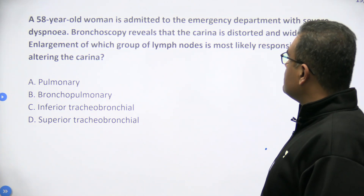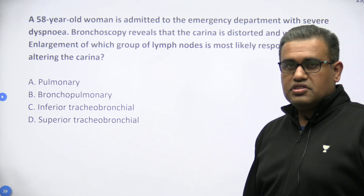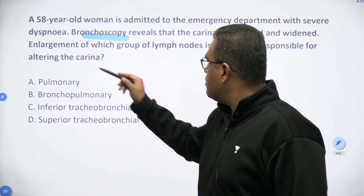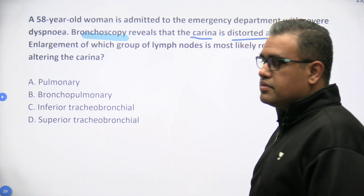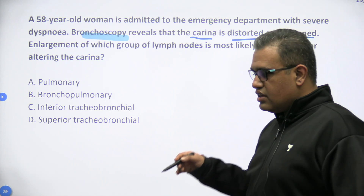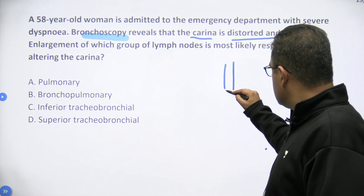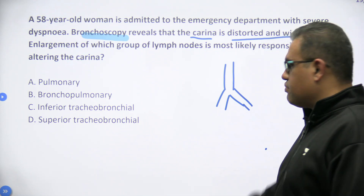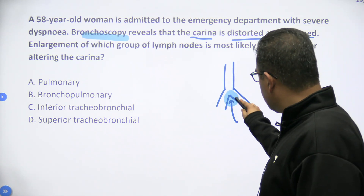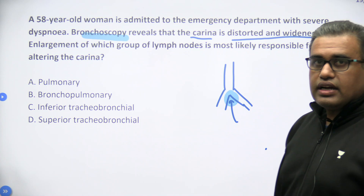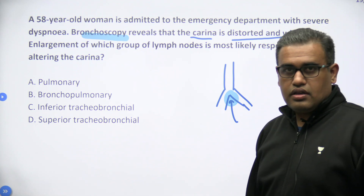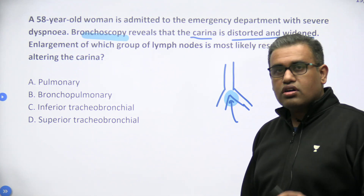A 58-year-old lady is admitted to the emergency with severe dyspnea. Bronchoscopy reveals that the carina is distorted and widened. We all know the carina is where the trachea bifurcates into right and left bronchi. Enlargement of which group of lymph nodes is most likely responsible for altering the carina? Options are: pulmonary, bronchopulmonary, inferior tracheobronchial, or superior tracheobronchial lymph nodes.